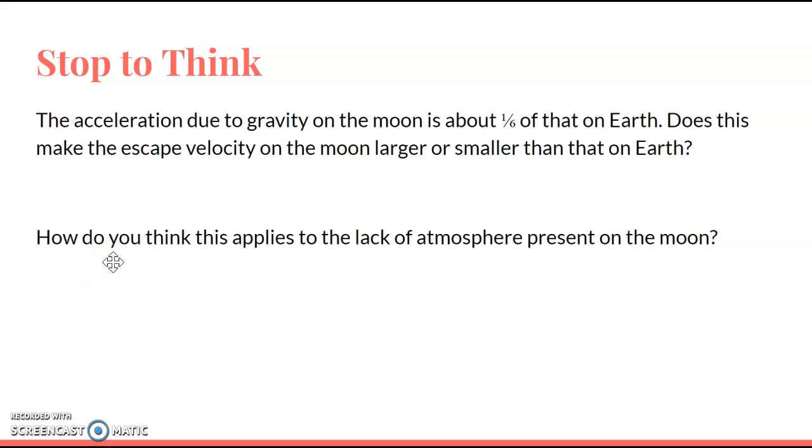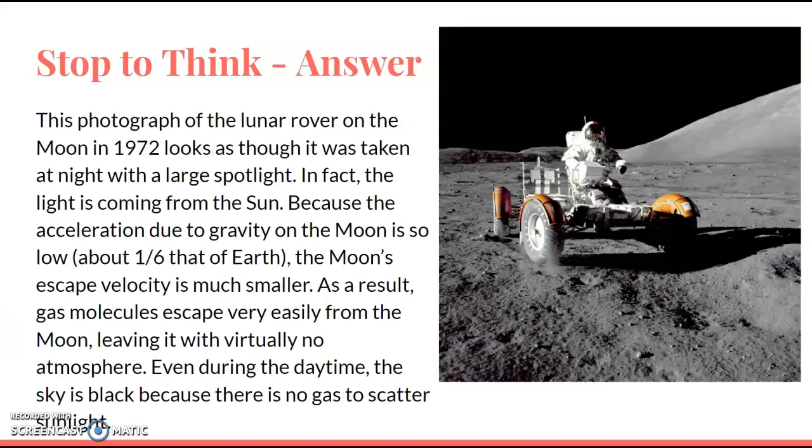How do you think this applies to the lack of atmosphere on the moon? This basically explains why there is no atmosphere on the moon—because the escape velocity for any gas molecules that are there doesn't have to be very fast in order to escape. The moon cannot keep an atmosphere because of that. This is why on the moon you don't see a quote-unquote sky—because there's no gas molecules for light to scatter and interact with, causing there to be the color. We're getting more into that when we get into optics, but there's no atmosphere, so there's no gas molecules to scatter sunlight, so there's no sky.